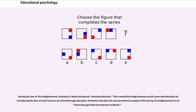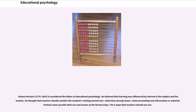During the Enlightenment, Pestalozzi's ideas introduced educationalization, creating a bridge between social issues and education. The most prominent example was improving agricultural production methods. Johann Herbart (1776–1841) is considered the father of educational psychology. He believed that learning was influenced by interest in the subject and the teacher, and thought that teachers should consider the students' existing mental sets — what they already know — when presenting new information.